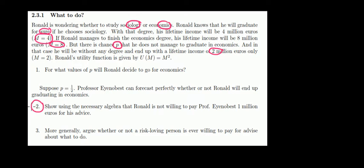Let's have a look at question 2. So suppose the probability of failing equals 1 over 2, and now we have this professor that can forecast whether or not we're gonna graduate in economics.